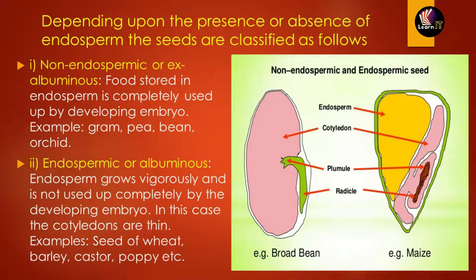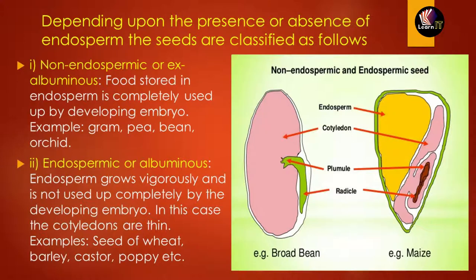As in the case of broad bean, there is no endosperm present — it has been used up completely at the time of seed development. In endospermic or albuminous seeds, the endosperm grows vigorously and is not used up completely by the developing embryo, so some endosperm remains. The cotyledons are thin in this case. Examples include wheat, barley, castor, and poppy.